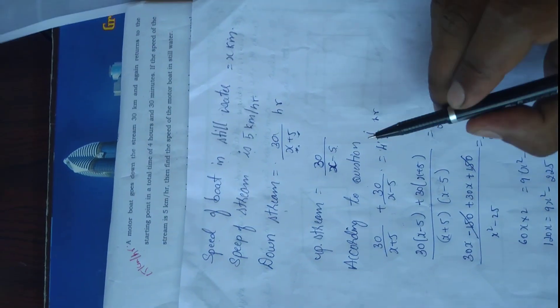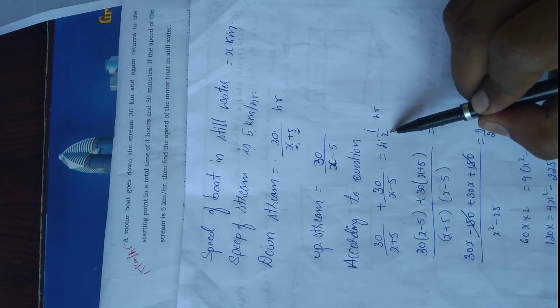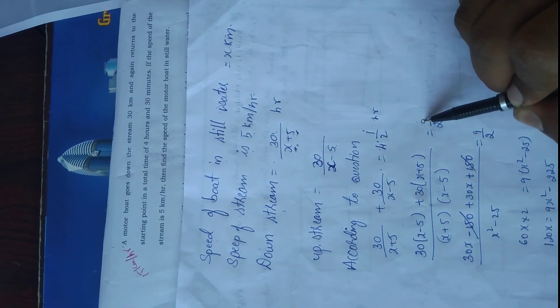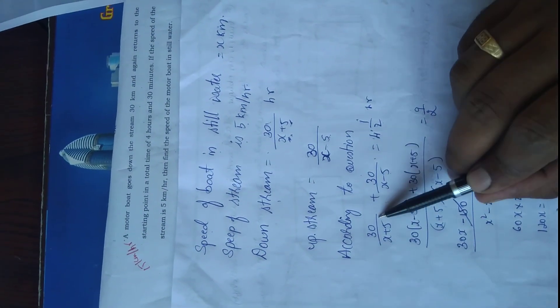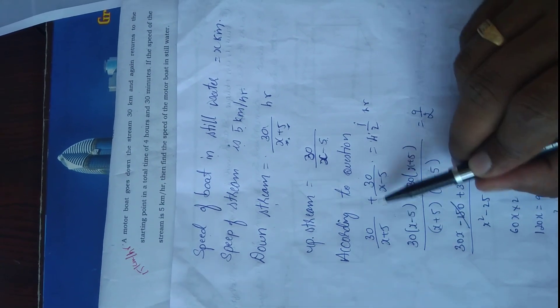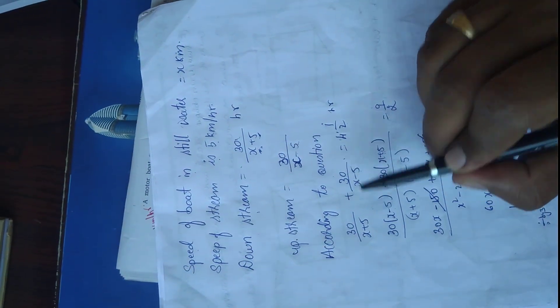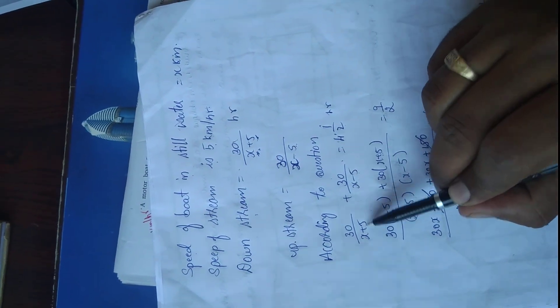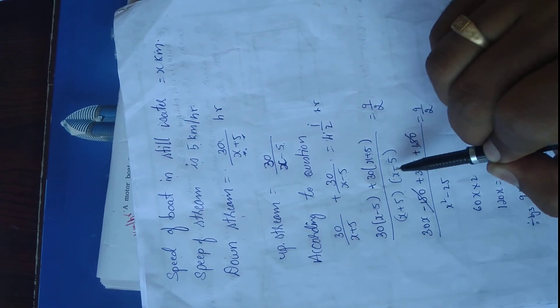Four and a half hours becomes 9 over 2. Now cross-multiplying, 30 into x minus 5 plus 30 into x plus 5 on the left side. To combine the fractions, we take the LCM, which becomes x plus 5 into x minus 5.